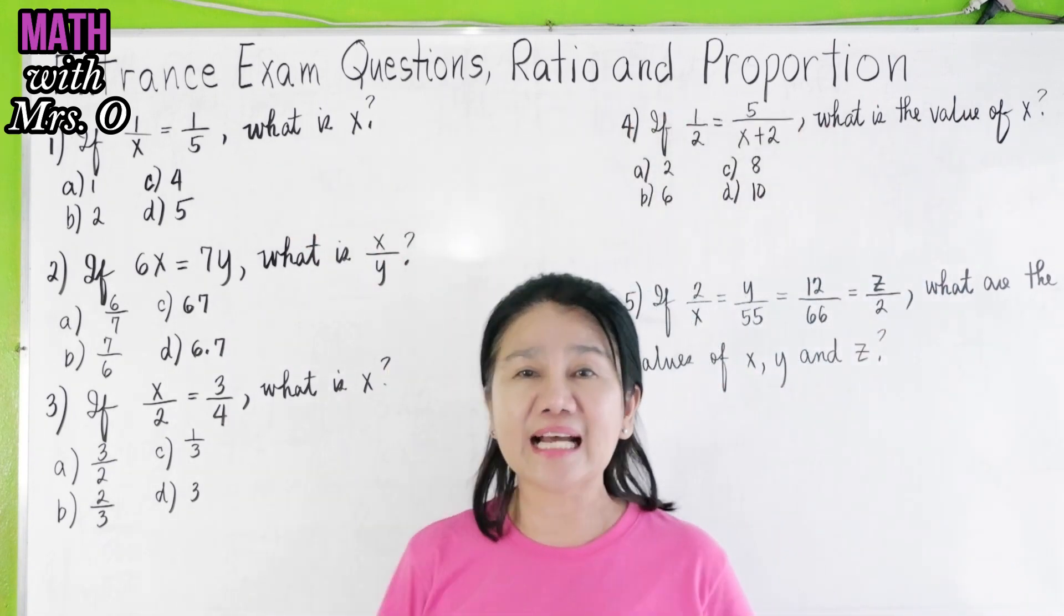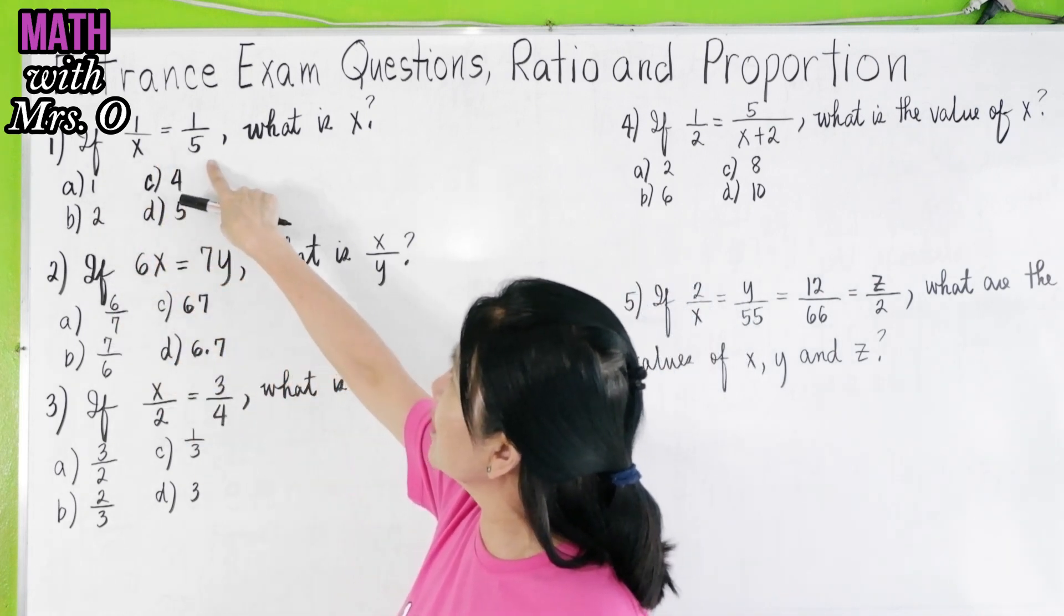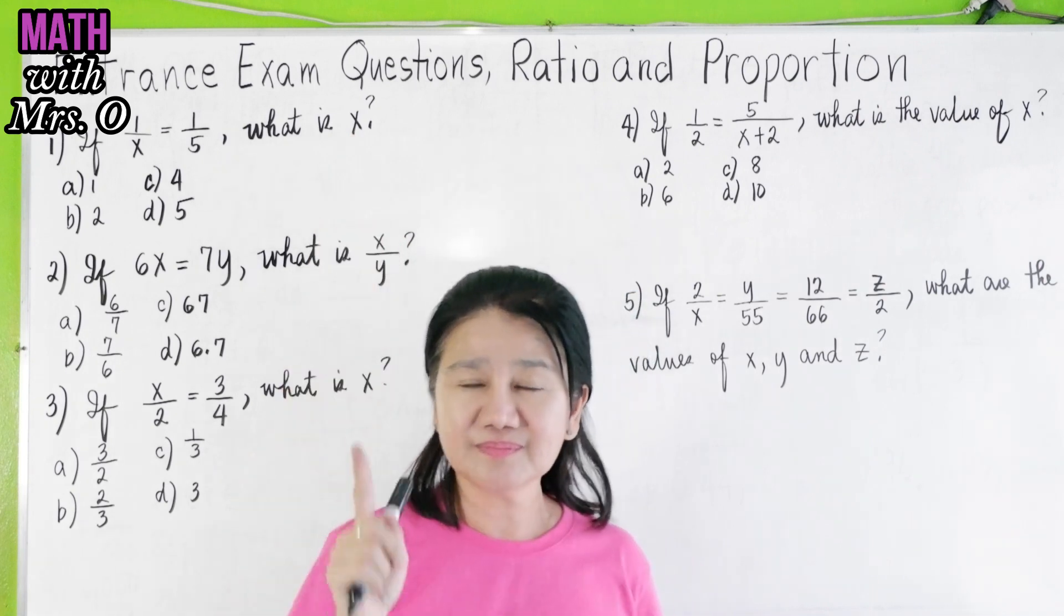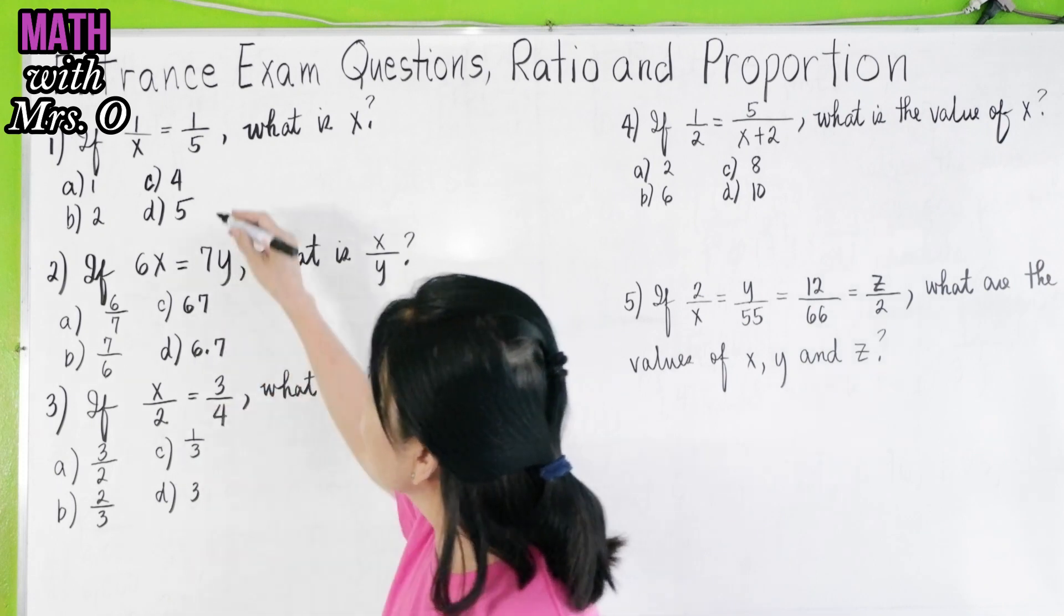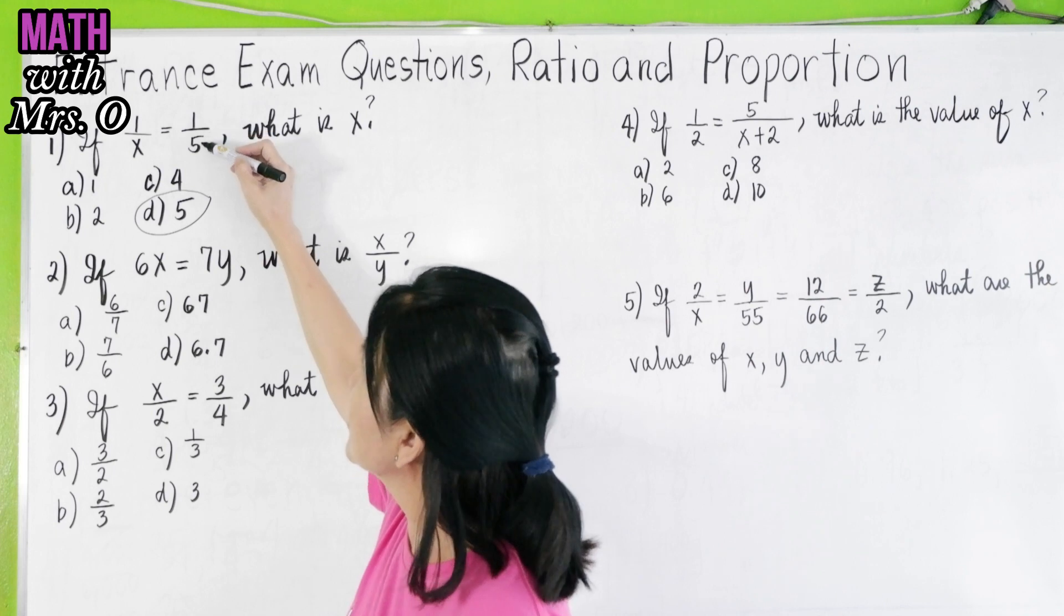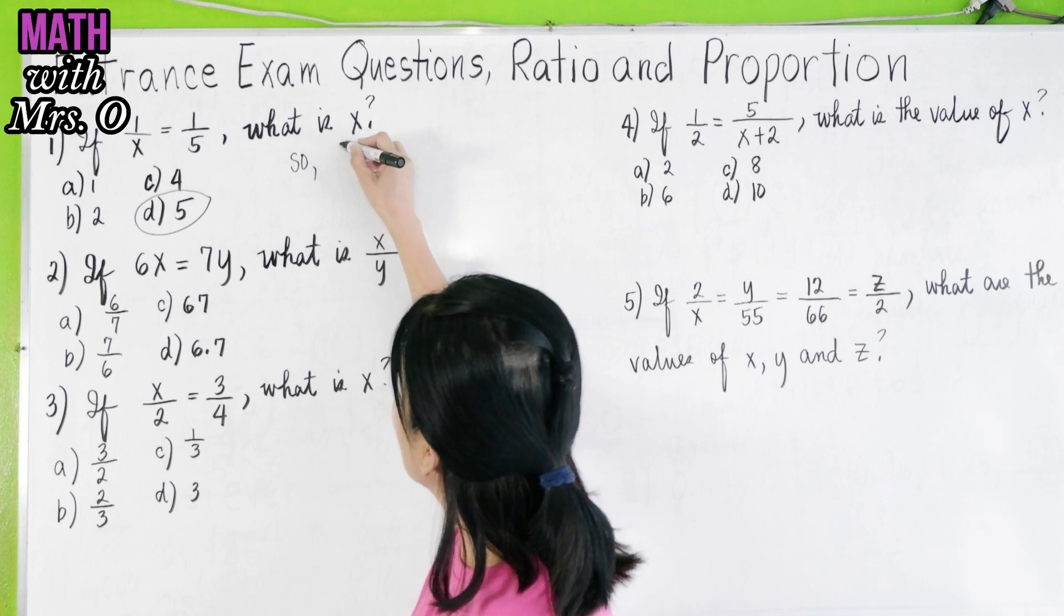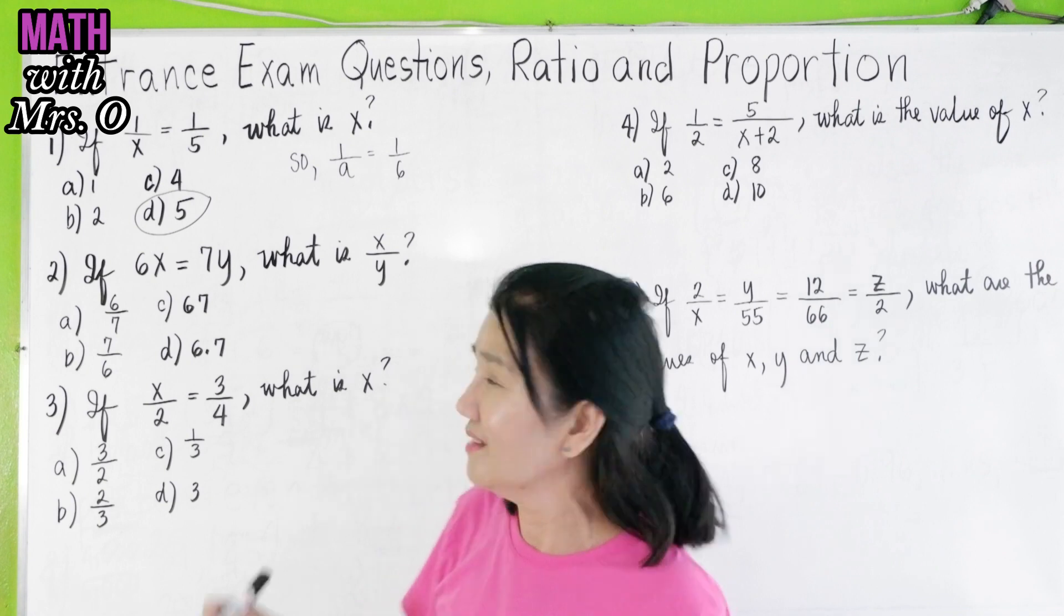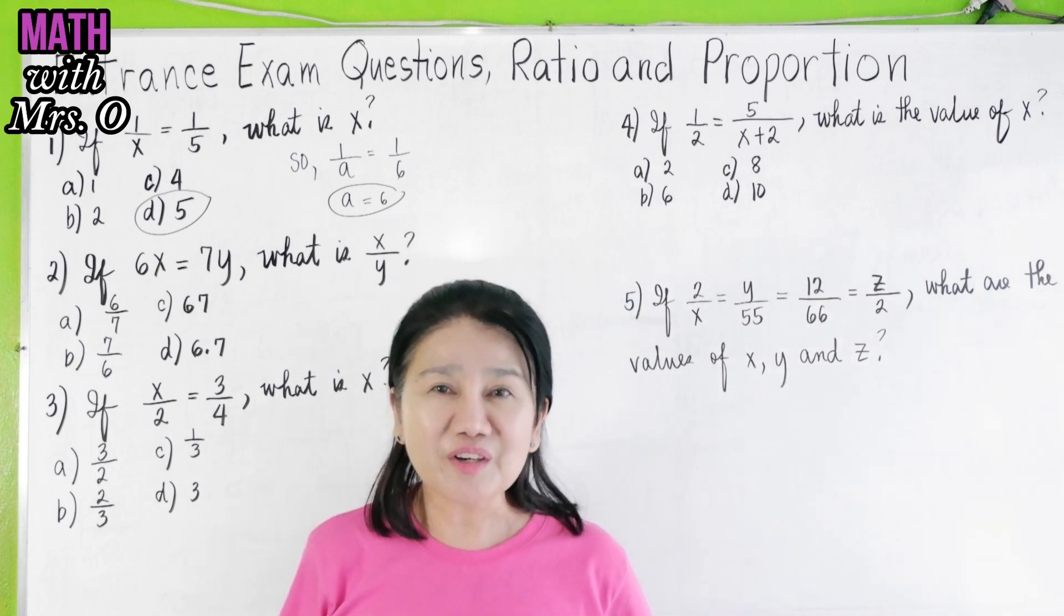These are the frequently asked questions. Number 1, if 1 over x equals 1 over 5, what is x? Very simple. The answer is, you have 3 seconds, 1, 2, and 3. The answer is 5. Because this is 1 over x, and this is 1 over 5. So x is equal to 5. Let us say I give you 1 over a equals 1 over 6. What is the value of a? Obviously, a is 6, because they have the same numerator.